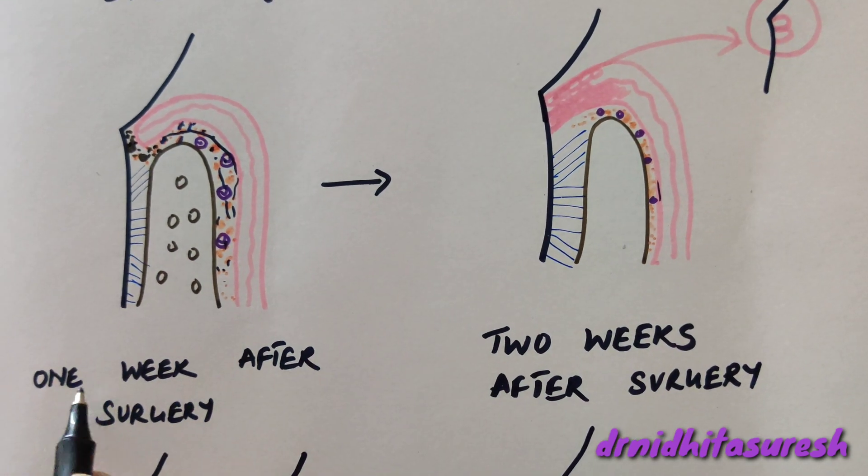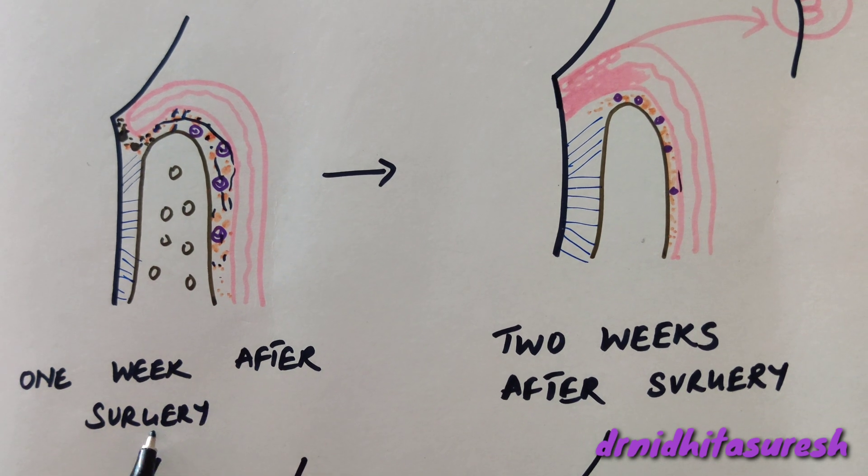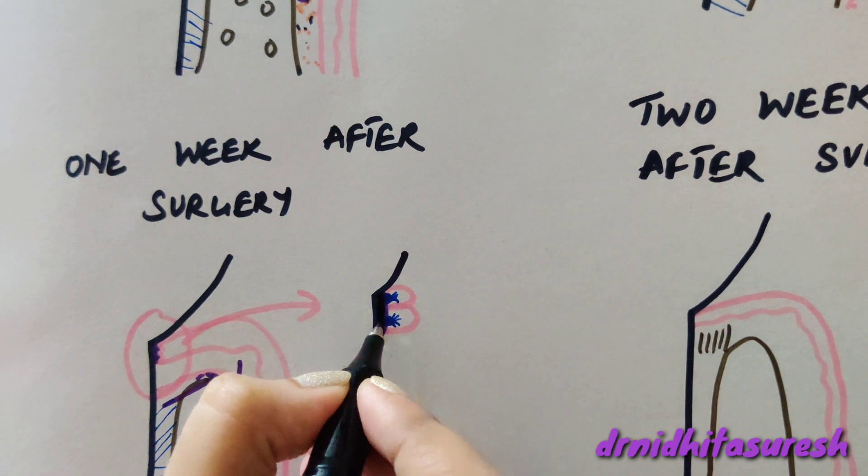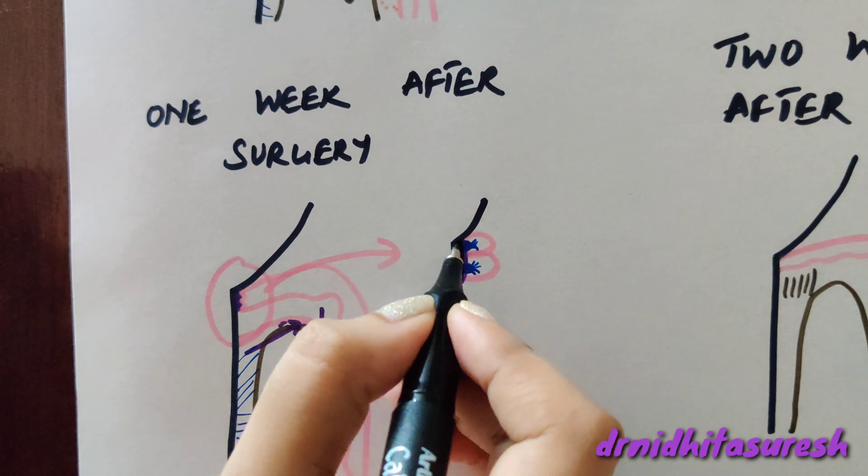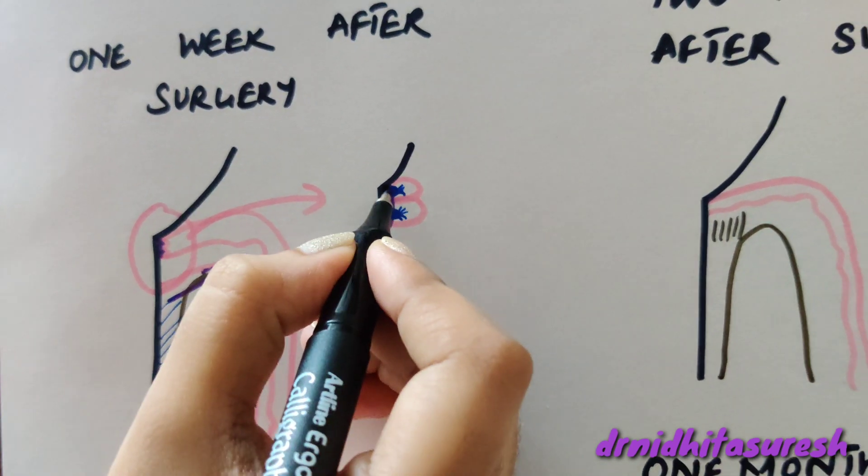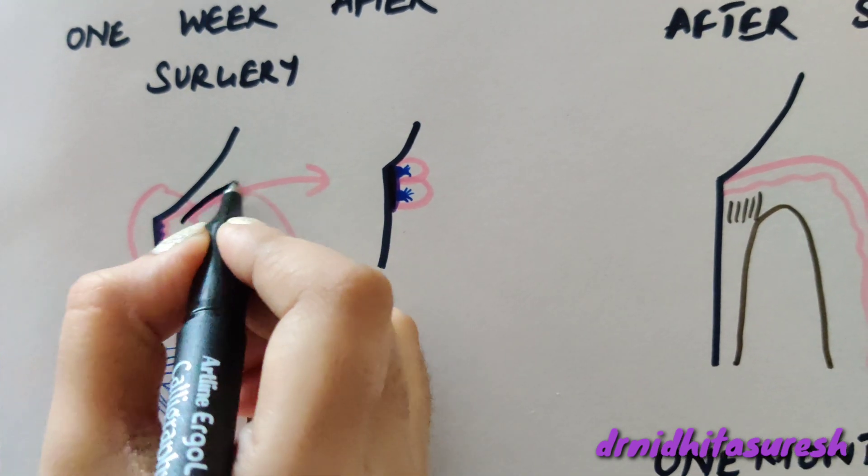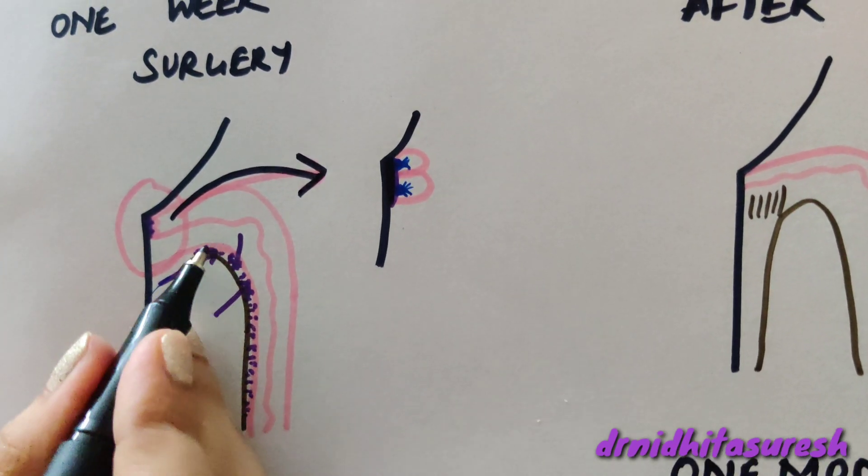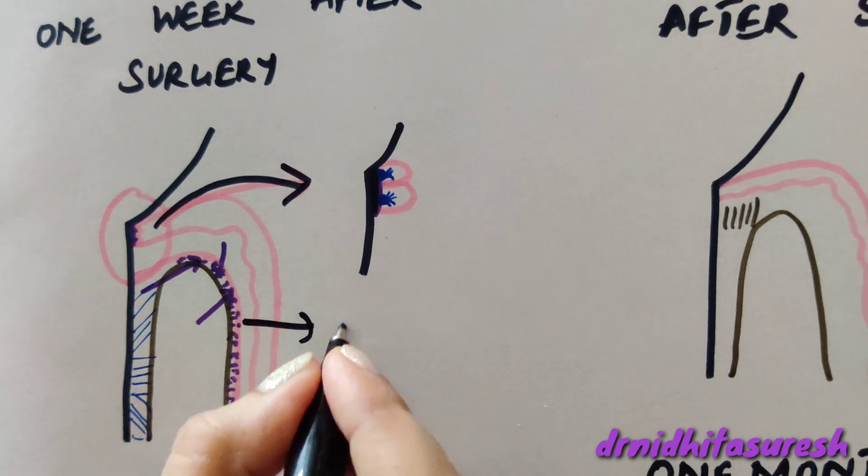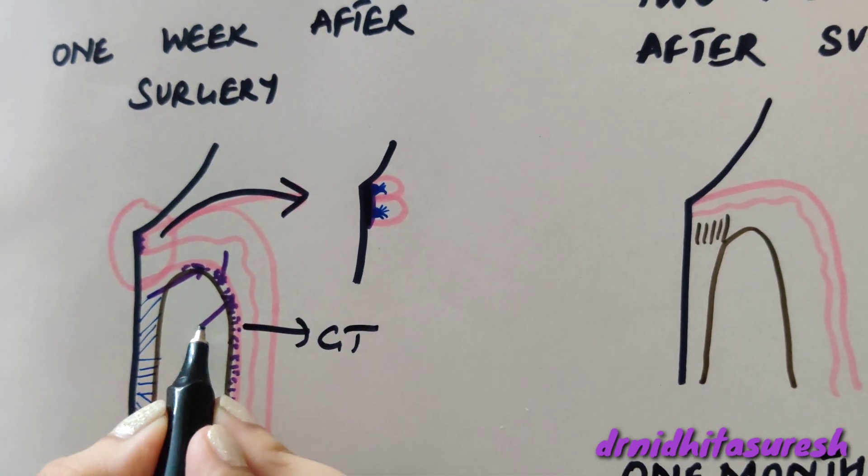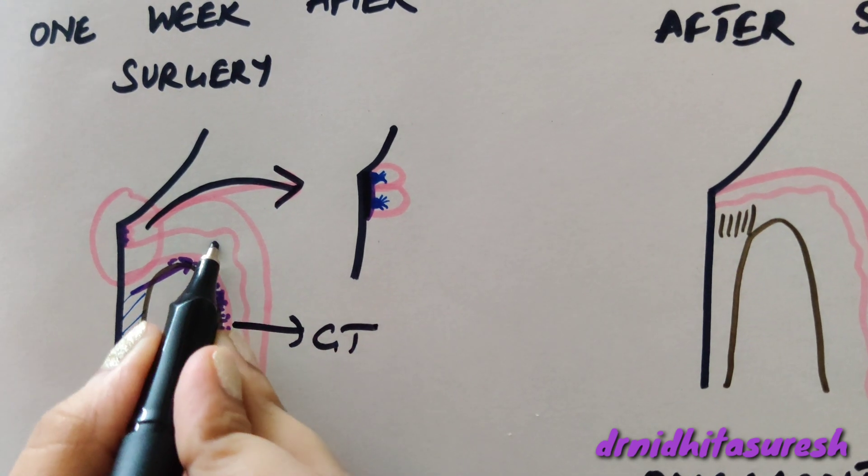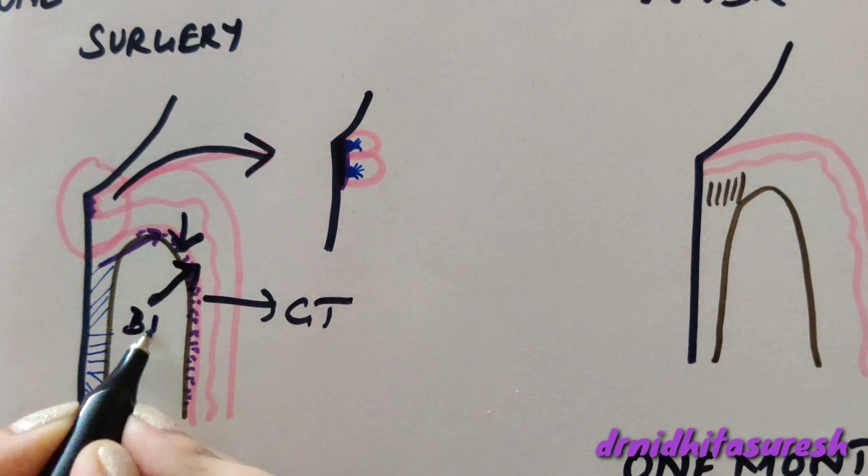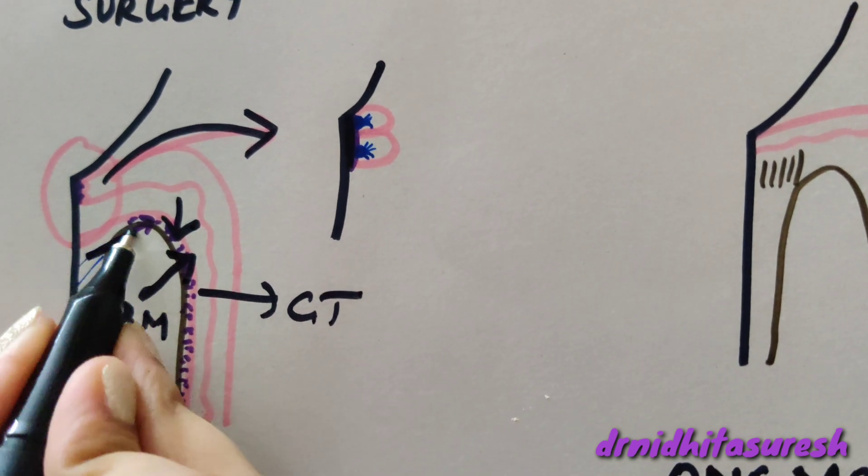One week after surgery, the epithelium will form a basal lamina and get attached to the tooth via a basal lamina and hemidesmosomes. The blood clot will be replaced by granulation tissue which derives from the gingival connective tissue, the bone marrow, and the periodontal ligament.